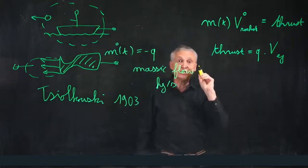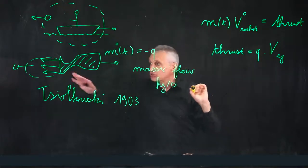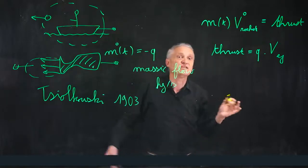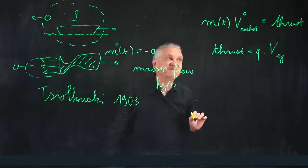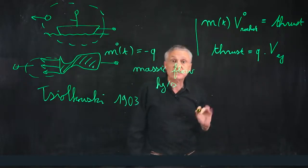Please, do not confound the velocity of the rocket with the ejection speed. The ejection speed is the velocity of the gas, and the velocity of the rocket is the velocity of the rocket. By integration of these two equations, it's very simple.